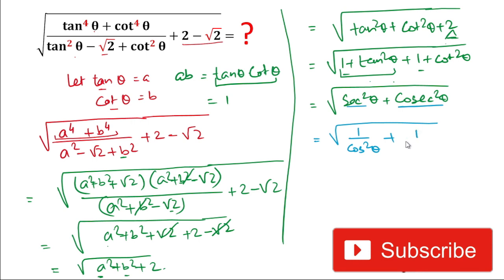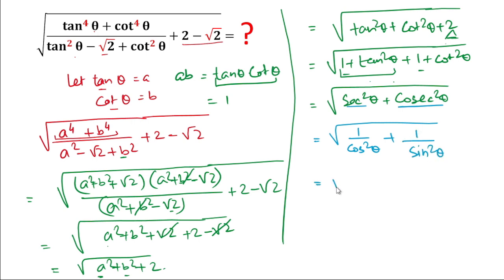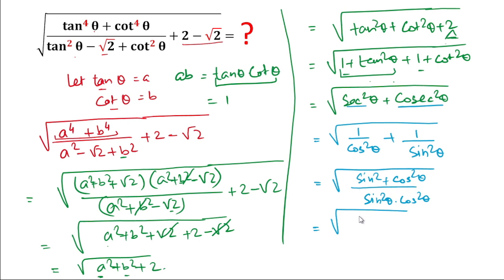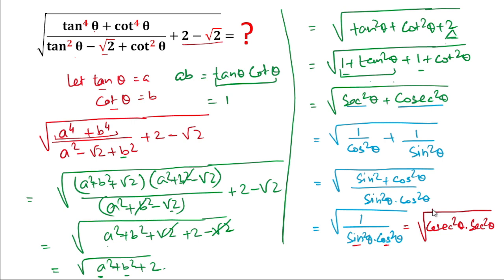So our expression becomes under root of (sec²θ + cosec²θ), which is under root of (1/cos²θ + 1/sin²θ). Taking LCM of sin²θ·cos²θ, this becomes under root of (sin²θ + cos²θ) / (sin²θ·cos²θ). Since sin²θ + cos²θ = 1, we get under root of 1/(sin²θ·cos²θ) = under root of cosec²θ·sec²θ. The square root and square cancel, giving the final answer: sec θ · cosec θ.